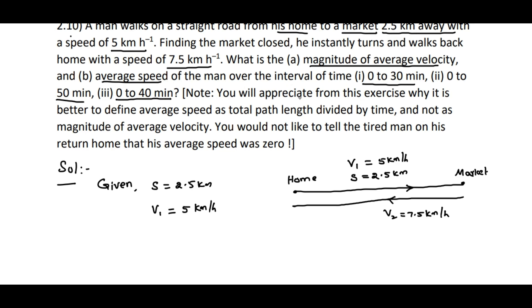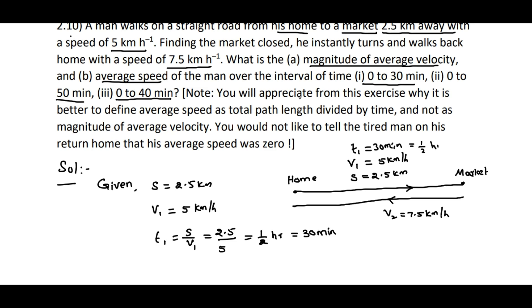The speed v1 is 5 kilometers per hour as per the given data. The time taken for the forward journey is equal to s divided by v1, that is 2.5 kilometers divided by 5 kilometers per hour, which equals half an hour, that is also 30 minutes. So T1 equals 30 minutes, which is also half an hour. This is the time taken to reach the market.